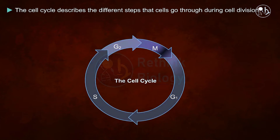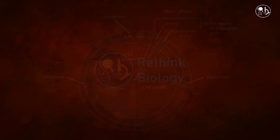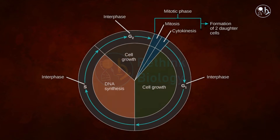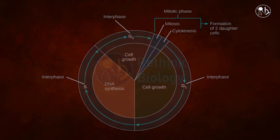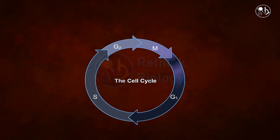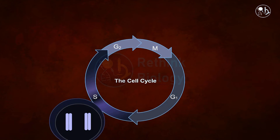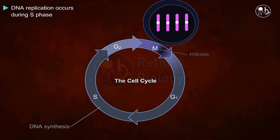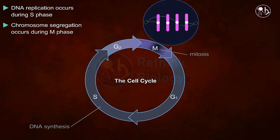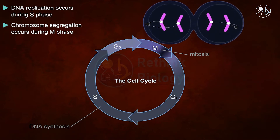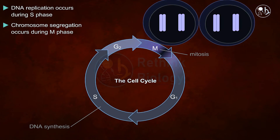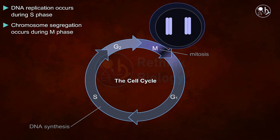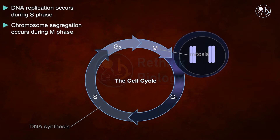The cell cycle has four prominent stages: G1 or Gap 1 phase, S or Synthesis phase, G2 or Gap 2 phase, and M or Mitosis phase. Basically, the cell cycle has two main events: DNA replication and chromosomal segregation. In the S phase, DNA replication takes place, and in the M phase, chromosomal segregation occurs. Between the S and M phases there are two gap phases, G1 and G2.